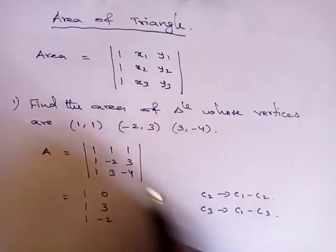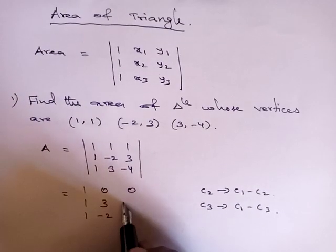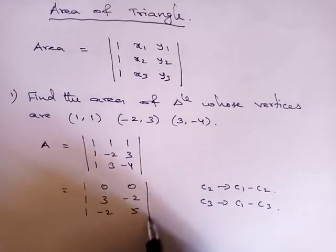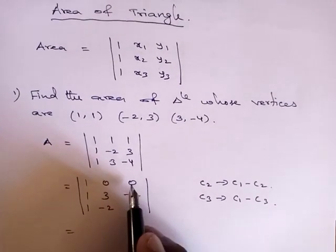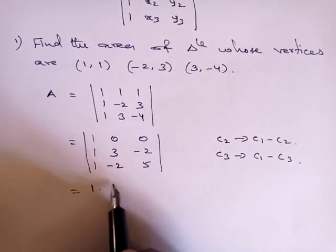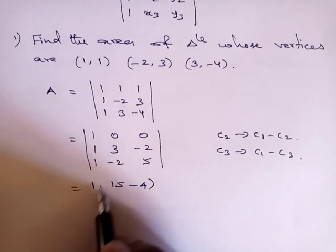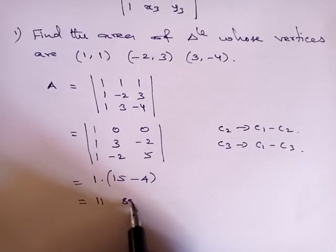1 minus 1, this becomes 0. 1 minus 3, that is minus 2. This minus this becomes 5. So it is nothing but 1, and these two values are 0. So it is nothing but 1 into 15 minus multiplying this to 4. So what you will get: 11 square units.